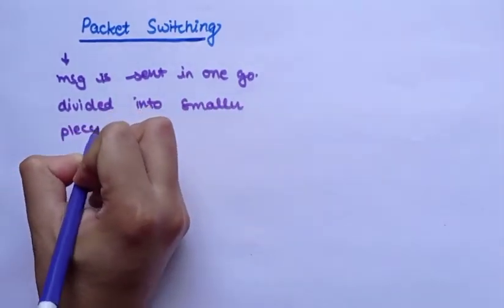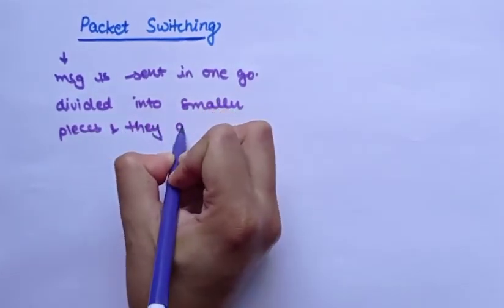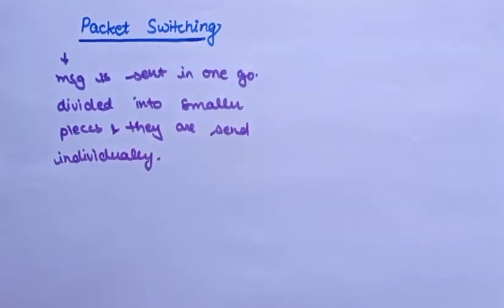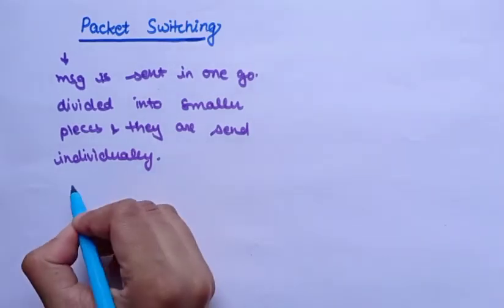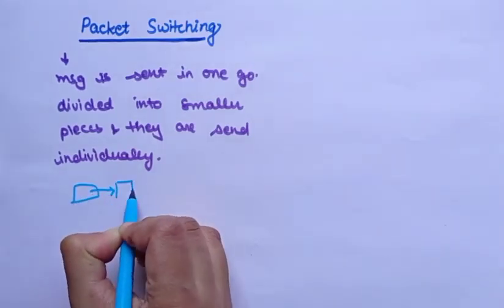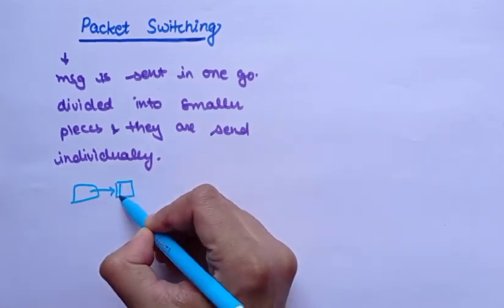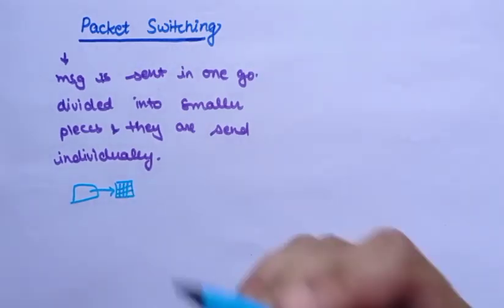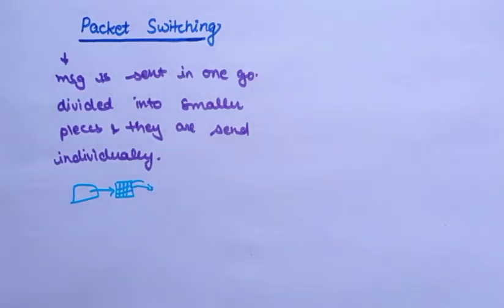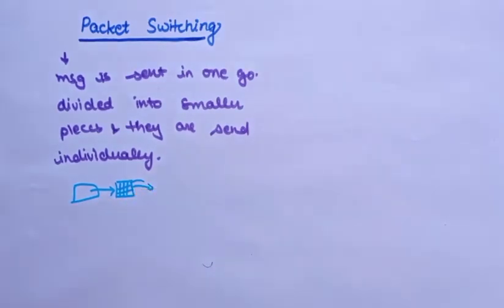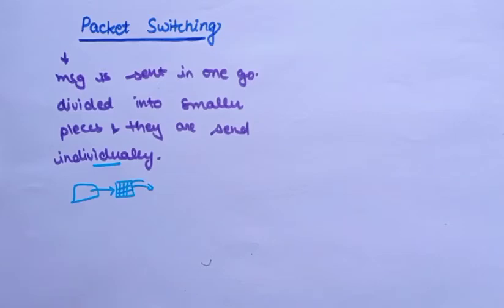Unlike other switching types where the whole message is sent from source to destination as-is, in packet switching the message is divided into small packets and each packet is transmitted individually from source to destination. So a big message is divided into small packets and those packets are transmitted individually.